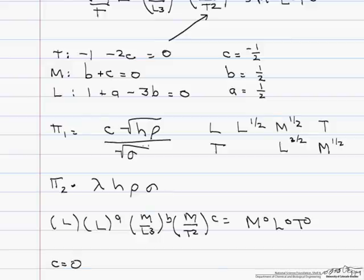So b equals zero. So that leaves us with a equals negative one. Our pi two, therefore, is lambda over h.